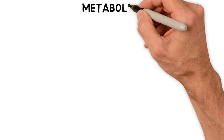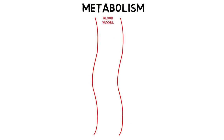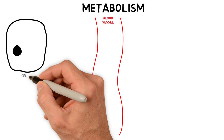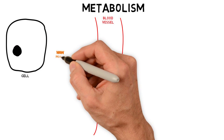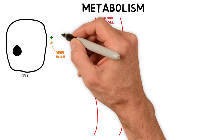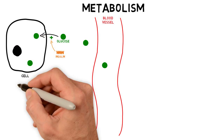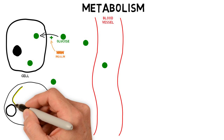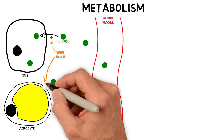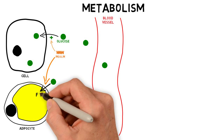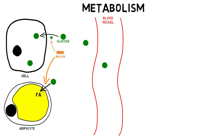Let's examine DKA at the cellular level. Insulin facilitates glucose uptake into cells and also promotes fatty acid synthesis. When insulin levels fall, like when a type 1 adolescent refuses to take their insulin, two primary changes occur: hyperglycemia and ketosis.